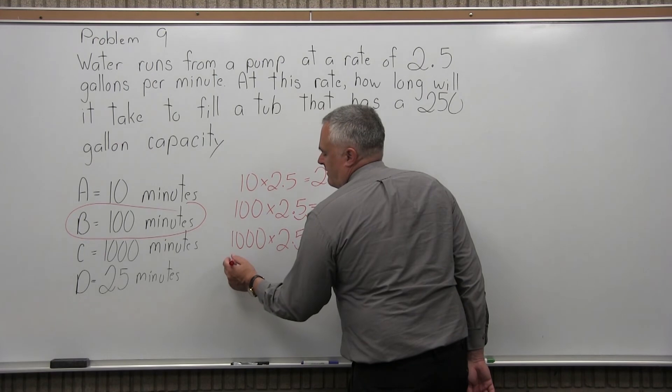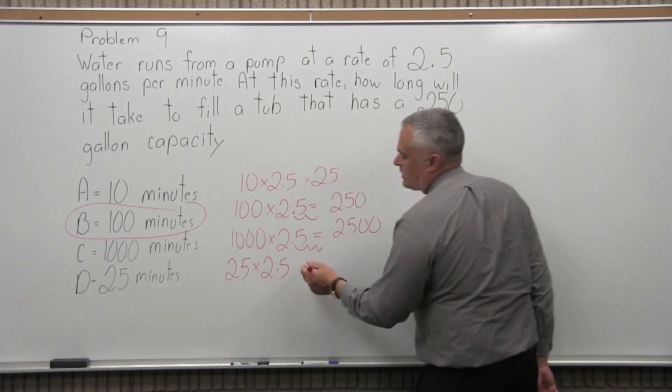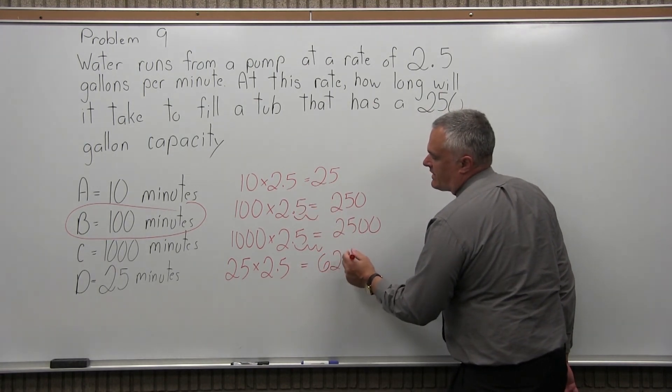And then the 25, 25 minutes times 2.5 each minute. That's probably something you'd want to do on a calculator. You could do any of these on a calculator, but it comes out to 62 and a half gallons.